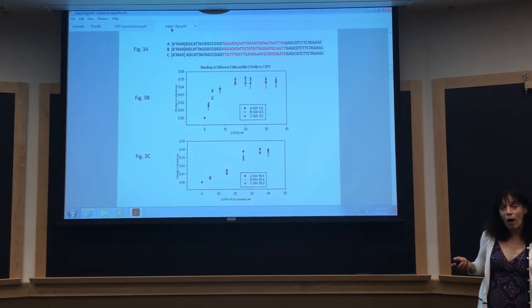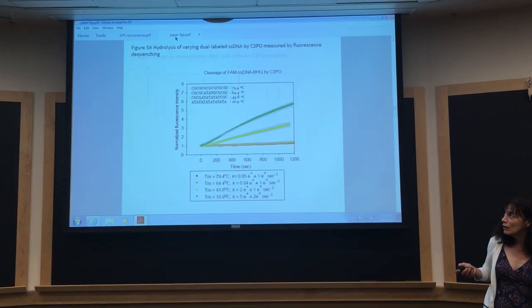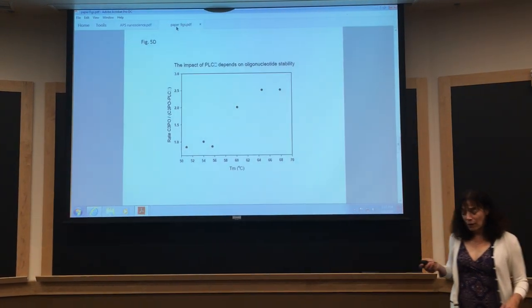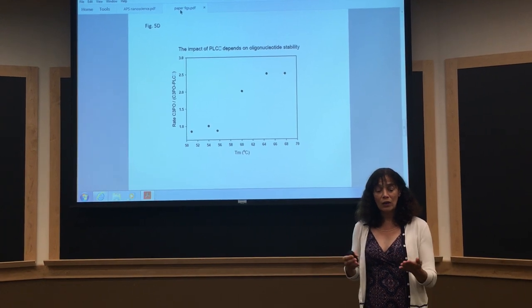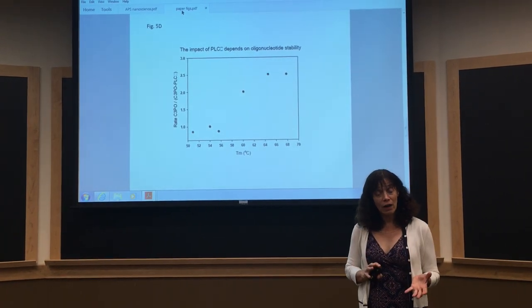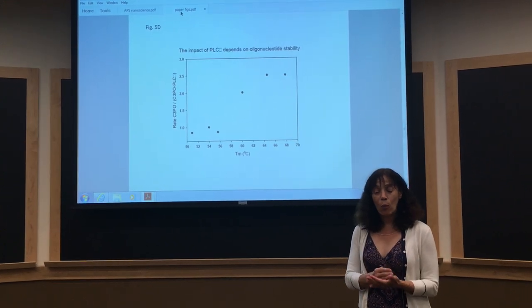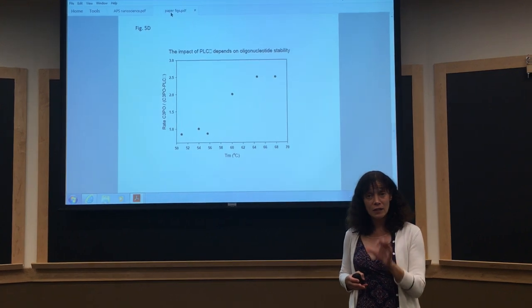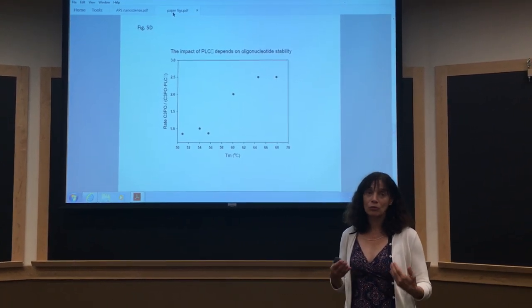So we then looked at binding with some of these proteins. And what we found, and I'll just go through these very quickly, is that basically what C3PO does is it binds fairly nonspecifically in sequence. It has a structural specificity, but nucleic acids that have a lot of AT character, it hydrolyzes much more quickly than nucleic acids with GC character.